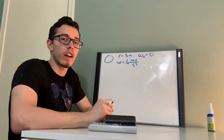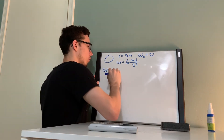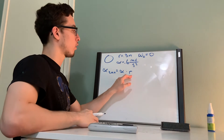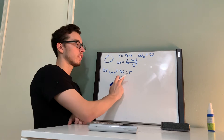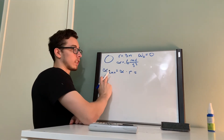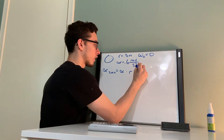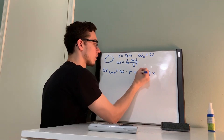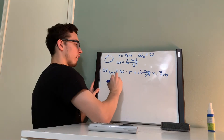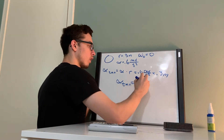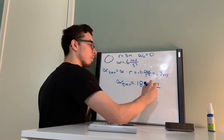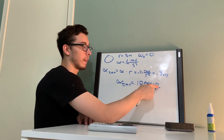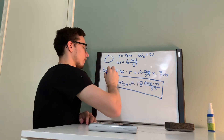Next, they ask us to find the tangential acceleration. This formula is equal to your angular acceleration times your radius. We know that both of these values are constant, so the tangential acceleration is also going to be constant throughout this whole problem. We can plug that in: 0.6 radians per second squared times 0.3 meters. We get a value of 0.18 meters per second squared, since radians cancel out. Our tangential acceleration is equal to 0.18 meters per second squared.